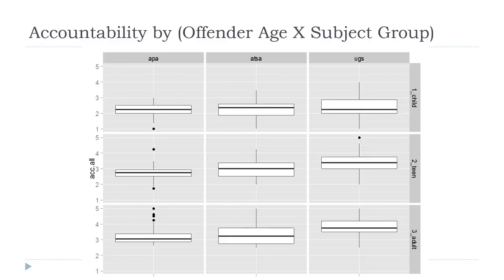Dependence only happens when we look at the interaction effect — just like for a chi-square. To illustrate this, let's look at some data from the punishment attitudes dataset. Let's look at some box plots — this is a matrix of box plots. There are actually nine cells, nine individual groups of participants.